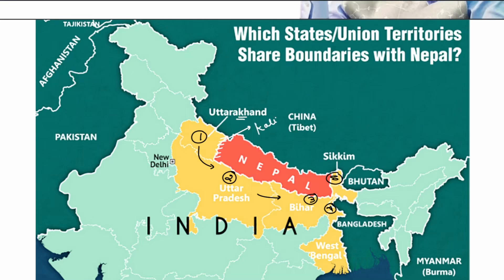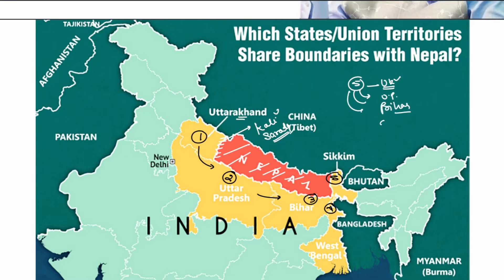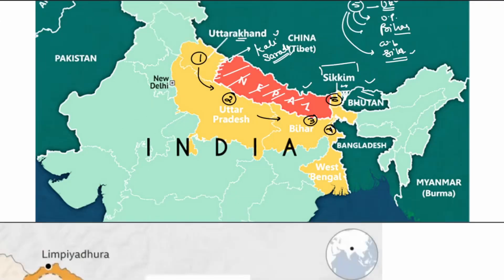This boundary is formed by the Kali River or the Sharda River, which makes a natural boundary between India and Nepal. The five states touching Nepal's boundaries are: Uttarakhand — where the issue is — Uttar Pradesh, Bihar, West Bengal, and Sikkim. Sikkim is like a potato between a sandwich, sitting between Nepal and Bhutan. This region also includes the Doklam Plateau.